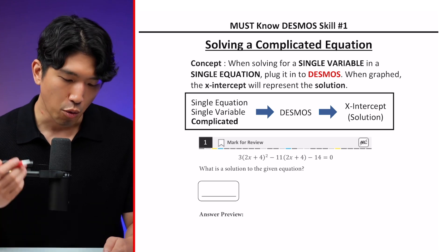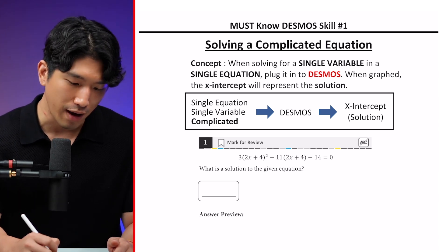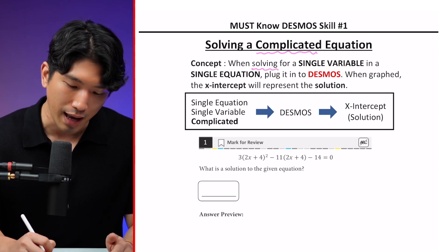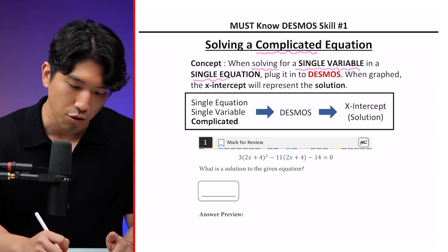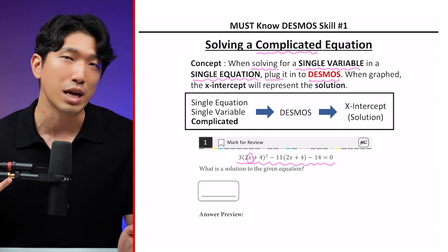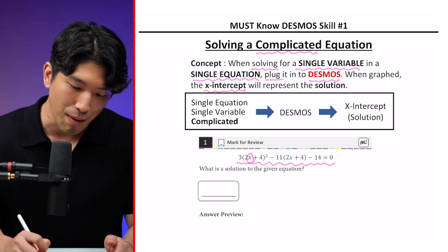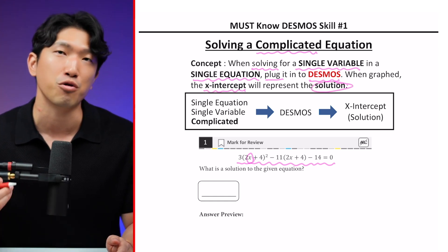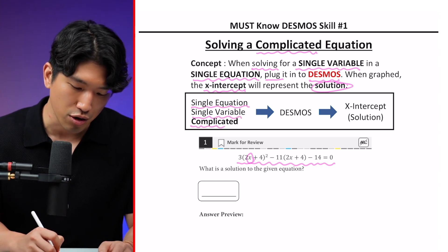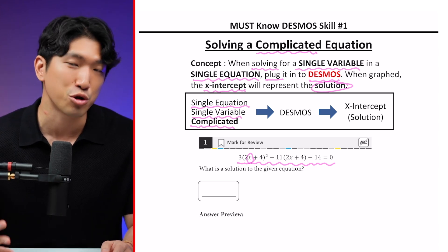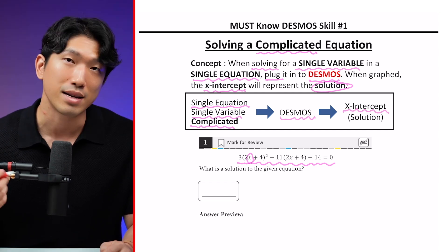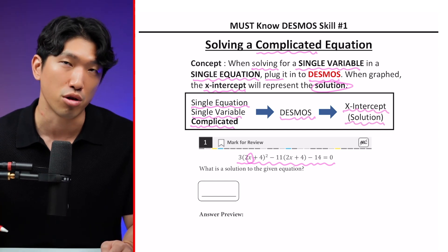So when are we supposed to use Desmos? Well, you can use Desmos to solve a complicated equation. And what I mean by that is whenever you're solving for a single variable in a single equation, then you can quickly solve for it by plugging it into Desmos because when the equation is graphed, the x-intercept will represent the solution or the value you are looking for.